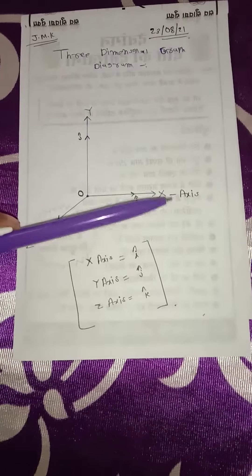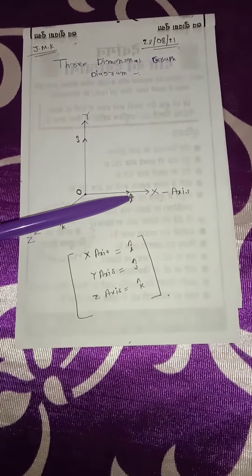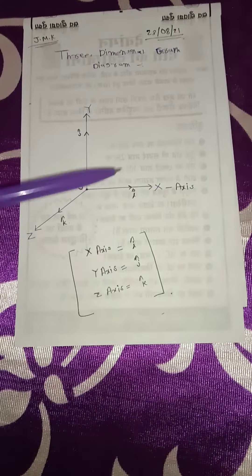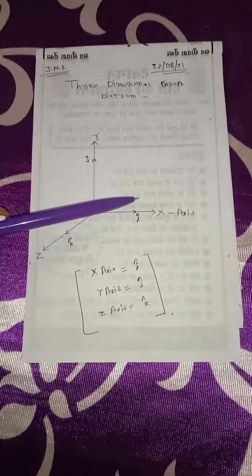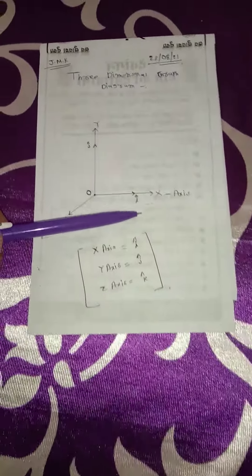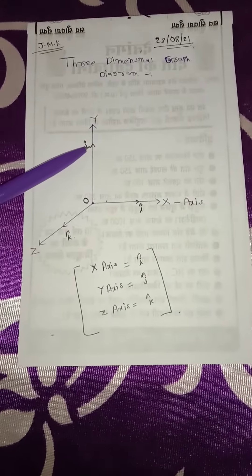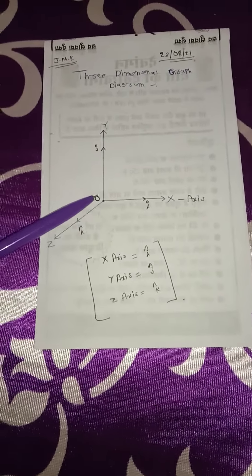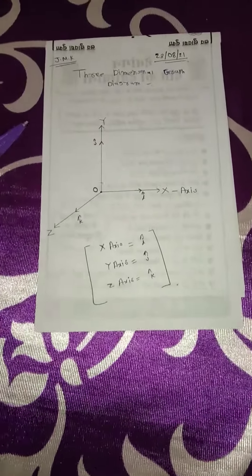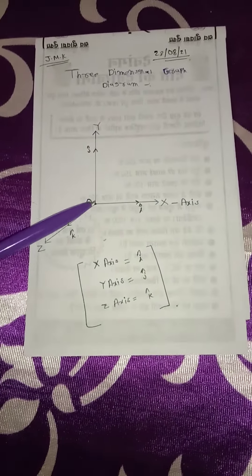Okay, the x-axis is equal to i-cap in vector form. Notice that vector form: i-cap for x-axis, j-cap for y-axis, and k-cap for z-axis. This is the center O. This is the three-dimensional graph. For two-dimensional graph, how to plot...